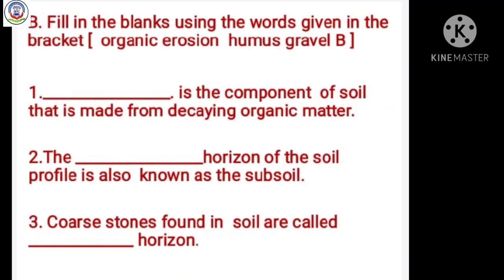Question B: Fill in the blanks using the words given in the bracket: organic, erosion, humus, gravel. Number 1: Dash is the component of soil that is made from decaying organic matter. Answer is humus.